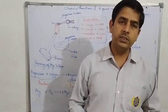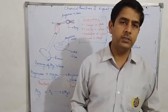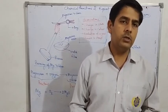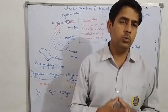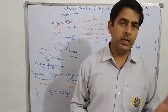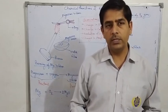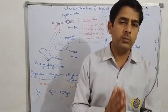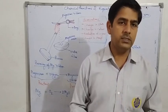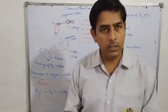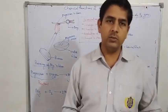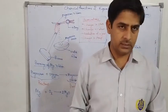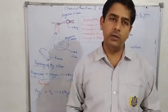On the other hand, if we discuss physical change, you can observe physical change all around us. In physical change, there is only a change in the physical state of a substance — there is no change in chemical composition. For example, melting of ice: when you melt ice, the chemical composition remains the same, only the physical state changes from solid to liquid.